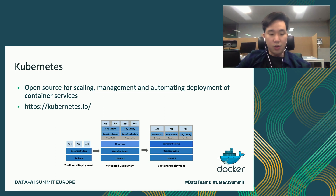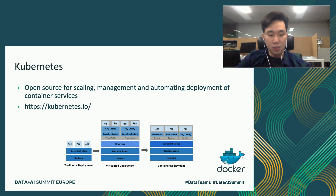Kubernetes is an open-source orchestration software that provides an API to control how and where containers run. Since it is not easy to manage a multi-cluster using Docker commands alone, Kubernetes helps tackle some of the operating complexities when scaling multiple containers across multi-servers. There is also Docker Swarm for managing multiple containers, but it has very limited operations, so Kubernetes is regarded as the more promising orchestration software.